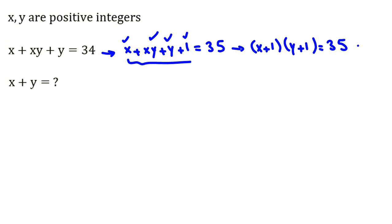If we prime factorize 35, it will be 5 times 7, so one way is you could say it is 5, 7, or 7, 5.